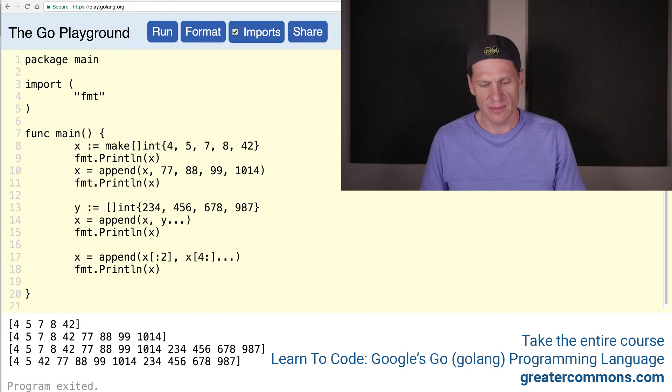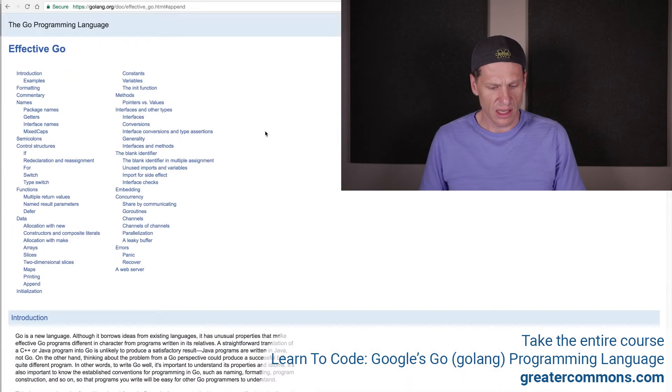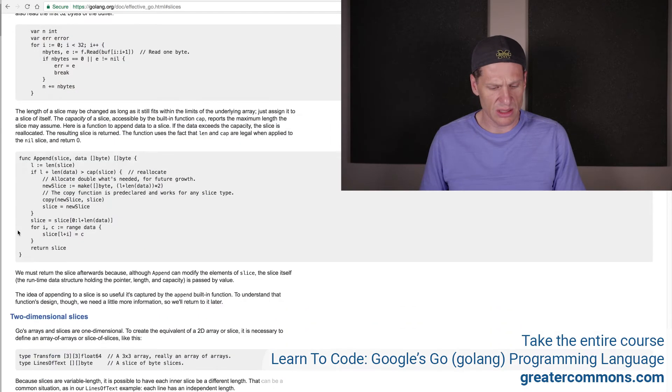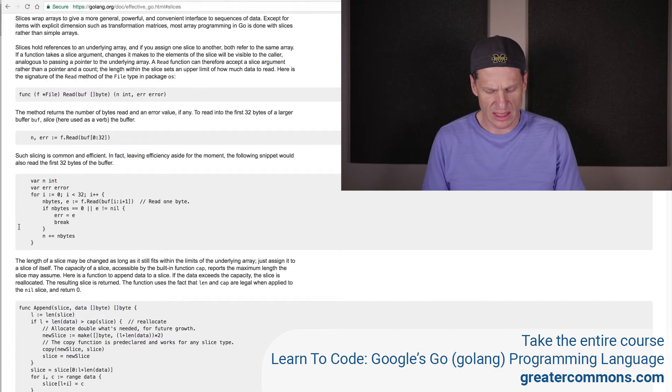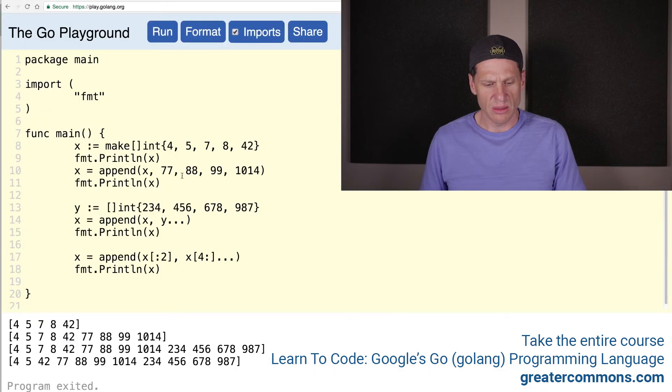So I'm going to do make. We can look it up to just see what this says here first. Let's just see what it says in effective go. And we will go to slices. And in here, append, two-dimensional slices. Just seeing if it says anything about make. Allocation with make. Make slice of int. And p. So that's it, basically. Let's just do it. All right. So I'm going to do make slice of int. And then I'm going to do my length and my capacity. All right. So I'm going to do make. And then I'm going to have the type slice of int.